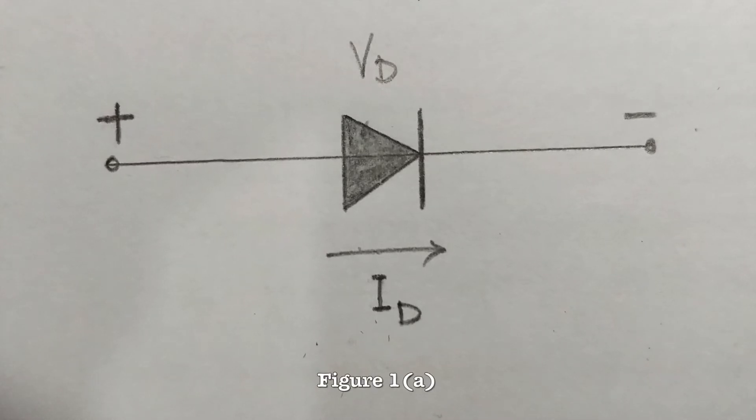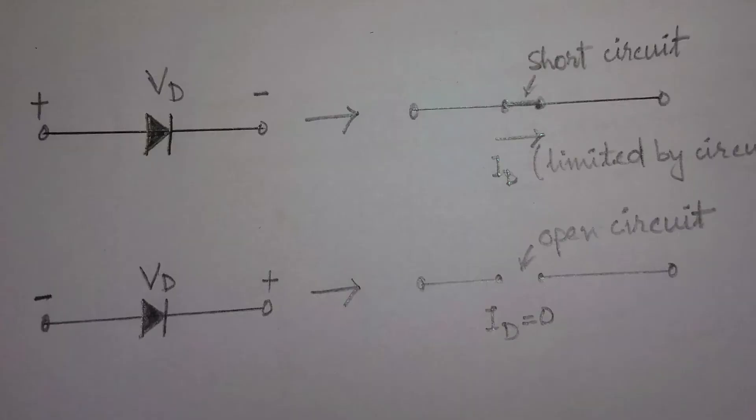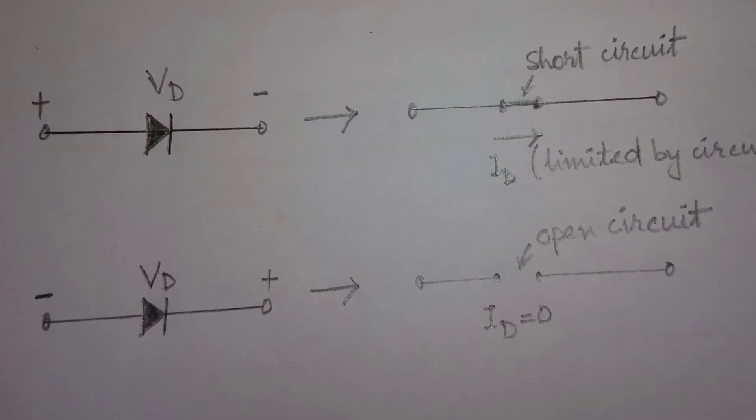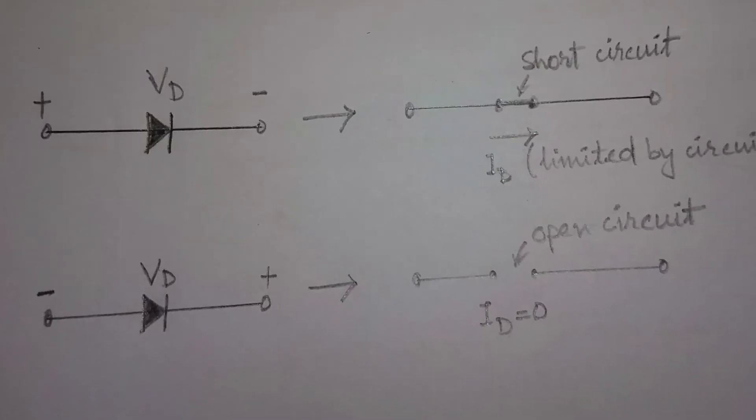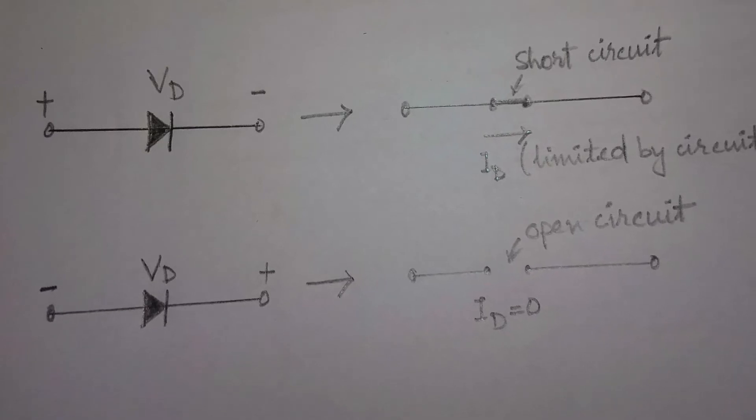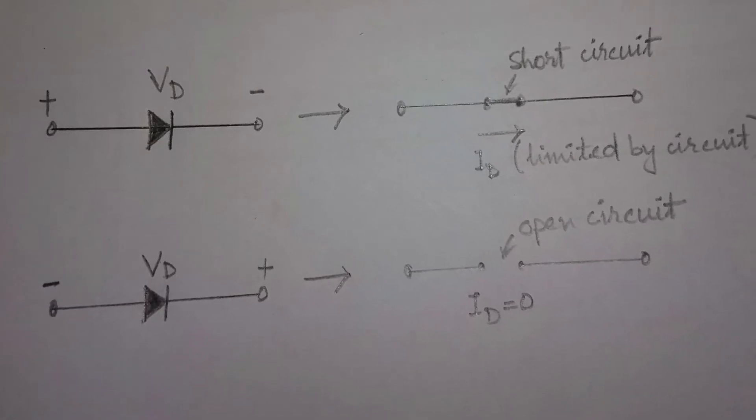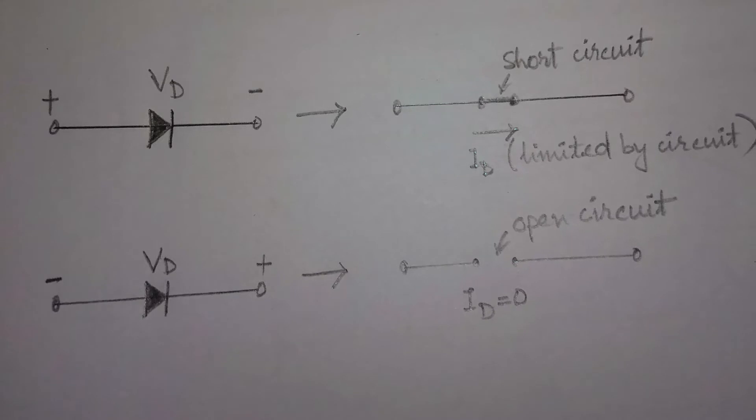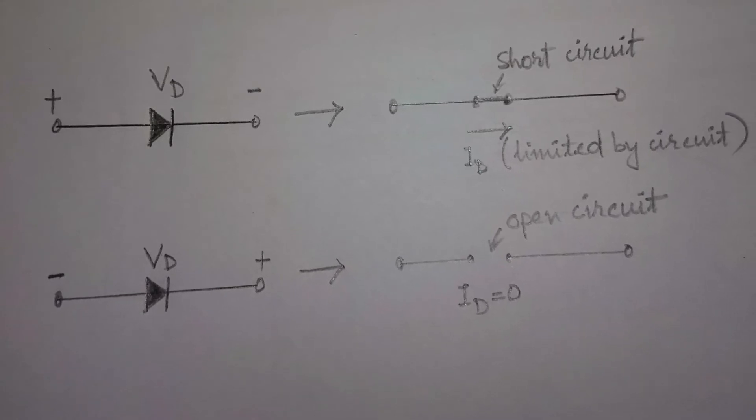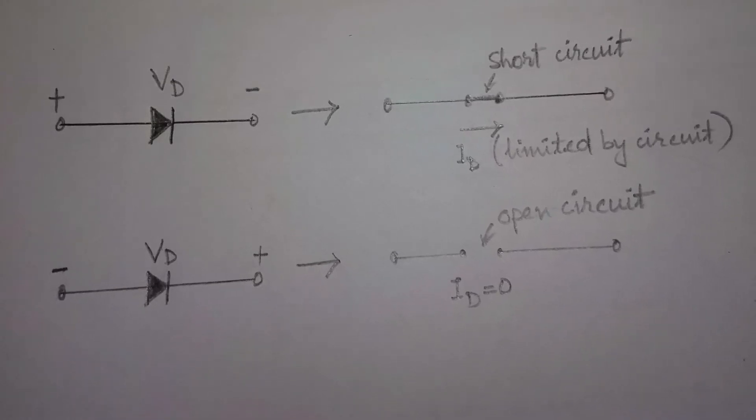Figure 1 shows the symbol of a diode. The characteristic of an ideal diode is that it conducts current in one direction, that is, it acts as a short circuit shown by the arrow, and opposes the flow of current in the reverse direction, that is it acts as an open circuit.